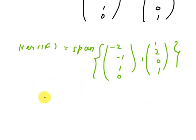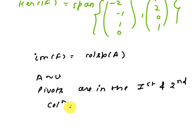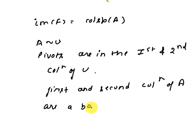Now we find the image of F. We know that image of F is equal to column space of A matrix. So, since A is equivalent to matrix U and pivots are in the first and second columns of U, so therefore, it follows that first and second column of A are a basis of column space A.